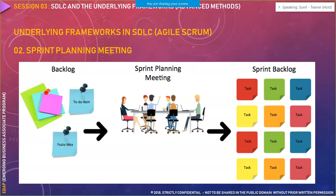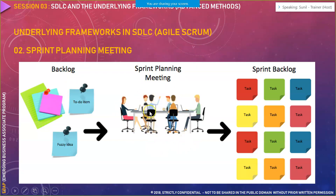Rules for conducting a stand-up meeting: the meeting must happen in the same place and at the same time, be a maximum of 15 minutes, be facilitated by the scrum master, the entire team should be present, and only three questions are asked to each participant. For sprint planning: after every 15 days — or whatever the sprint cycle — you go to the product backlog, pick up the prioritized items, discuss them in the sprint planning meeting, and create the sprint backlog based on the team's capacity or bandwidth. This process is repetitive at the frequency of the decided sprint cycle.